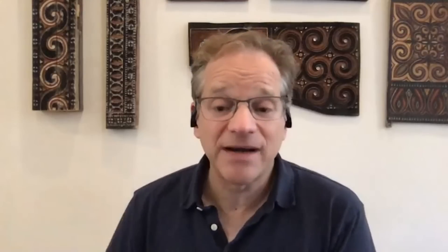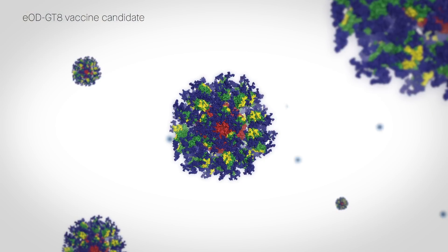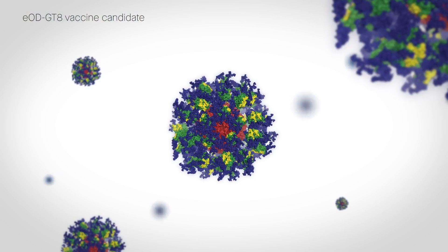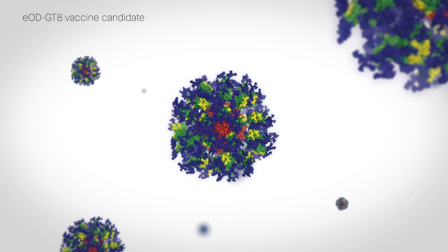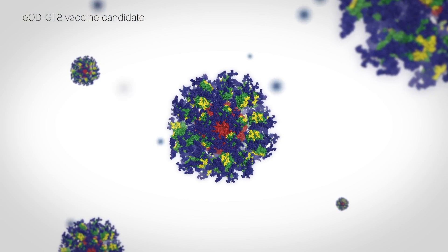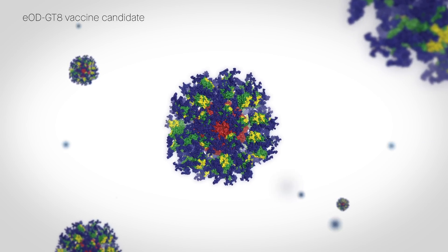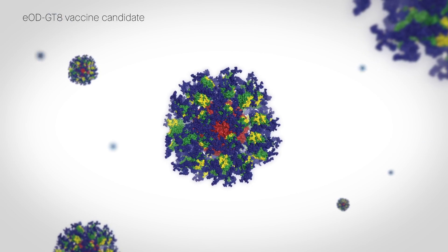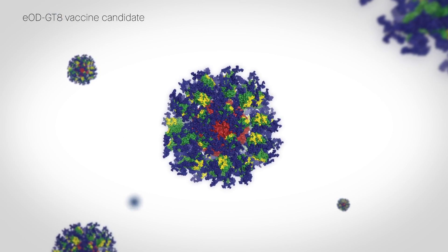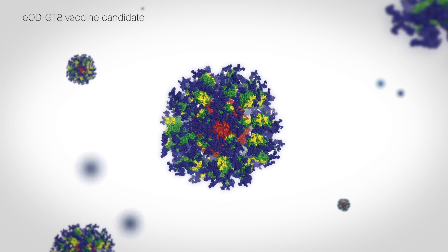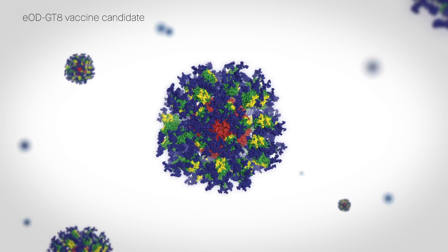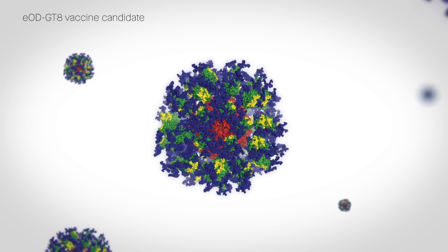In this case, we need the plasma cells to be secreting broadly neutralizing antibodies against HIV. So no matter which one of the 50 million different strains of HIV they were exposed to, the collection of all the different broadly neutralizing antibodies elicited by the vaccine would be enough to block that virus.